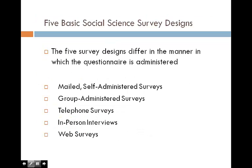There are five major social science survey designs. First are mail and self-administered surveys, a very traditional method to collect data. Mail surveys can reach people far away, but the challenge is that they cost a lot of money nowadays due to transportation and mail system challenges. The advantage is that you can ask sensitive questions, like people's lifestyle questions. The disadvantage is that the response rate is always kind of low in mail surveys.